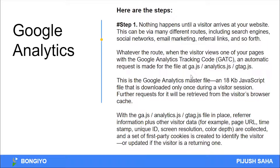There is a whole website. That file is downloaded only once during a visitor session. That means if visitors are on the web page, you can download the file — the file size is only 18kb. The browser downloads it. The file is a first-party cookie. The request for it will be retrieved from the visitor's browser cache. With the ga.js, analytics.js, or gtag.js file in place, referrer information plus other visitor data is collected.